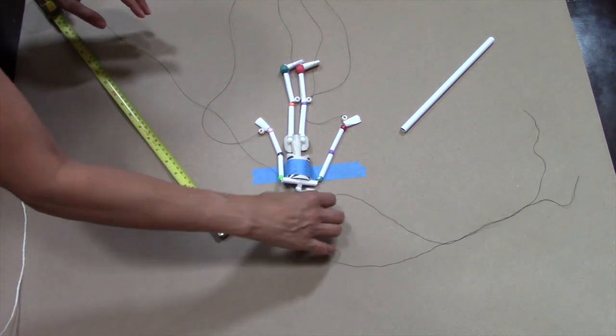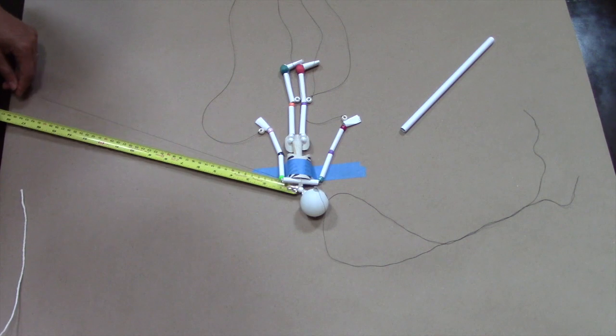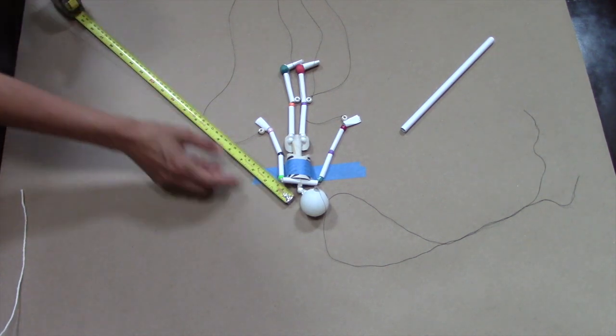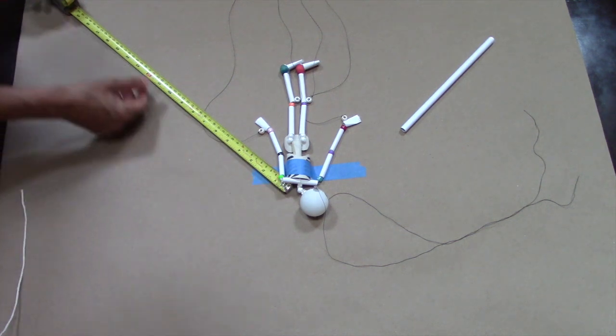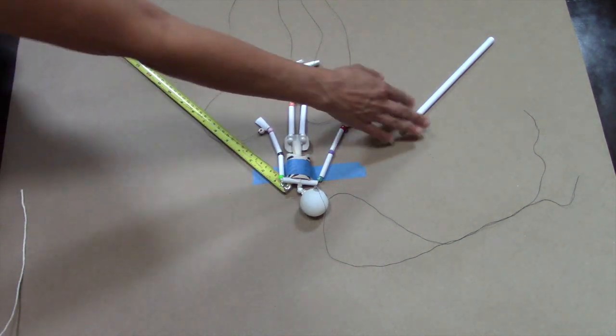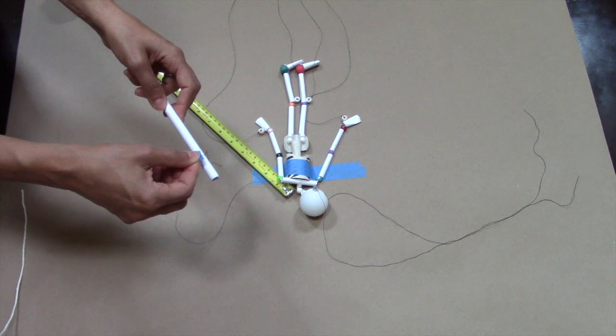Do the same thing for the string on the skeleton's back. This time measuring from the tab to the 19 inch mark. Attach the tape with the string to one end of the third control rod.